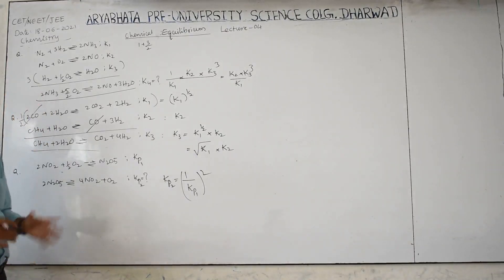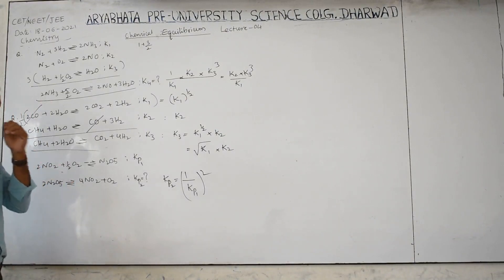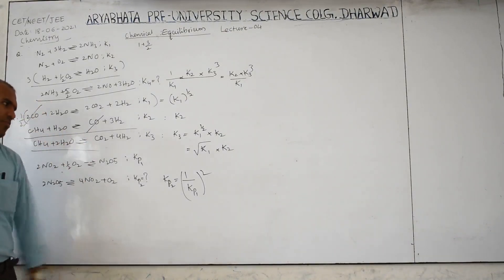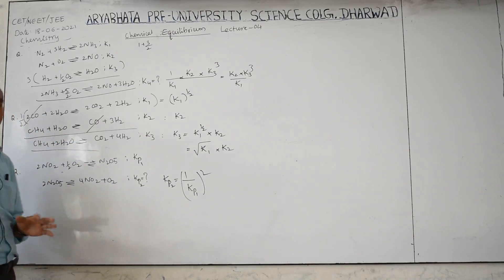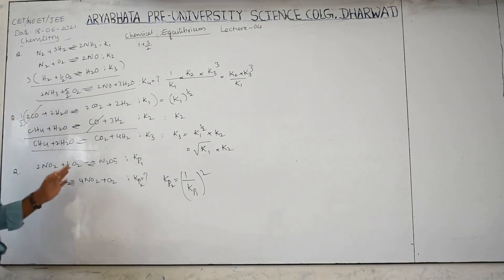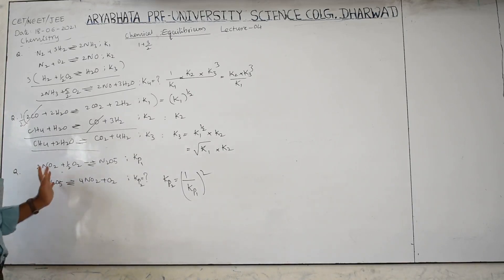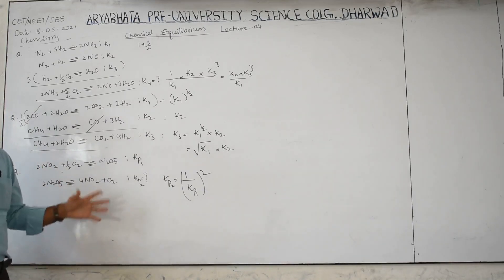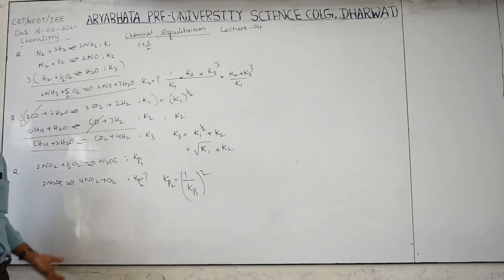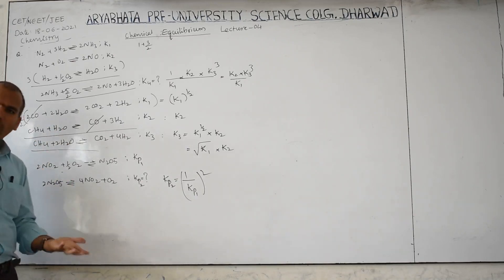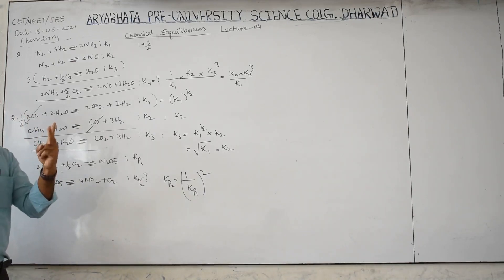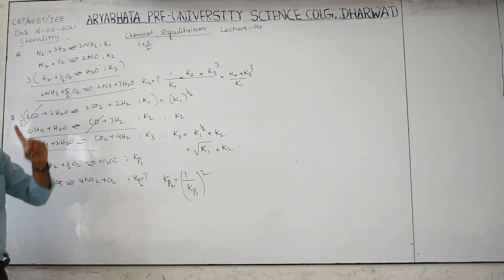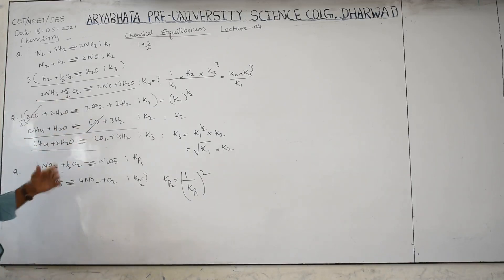I hope you understood. There are many problems based on this — previous year NEET-level questions — so you must practice many questions. We know that K value depends on only two things: one is temperature, and another is the mode of representation in stoichiometric coefficients. Addition of reactant, addition of product, increase or decrease of volume or pressure, addition of catalyst, addition of inert gas — none of these change the K value. Only temperature and stoichiometric representation change KC or KP.